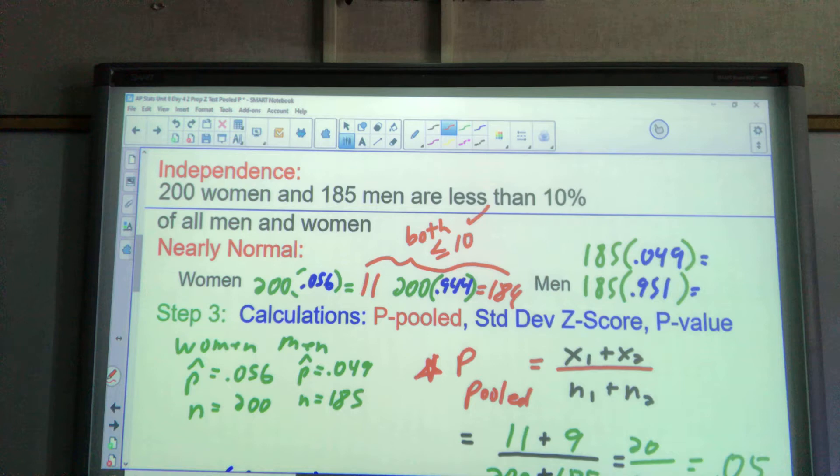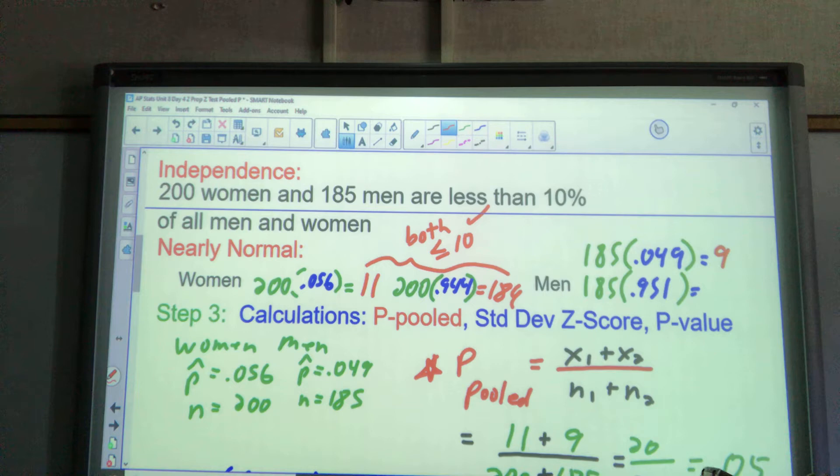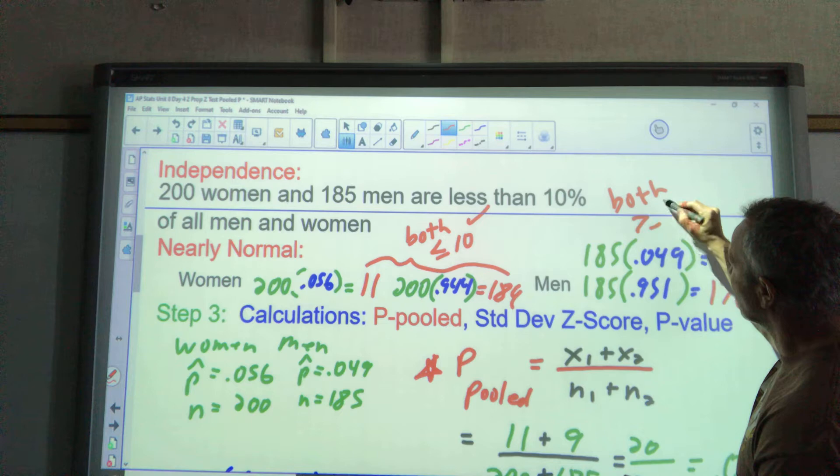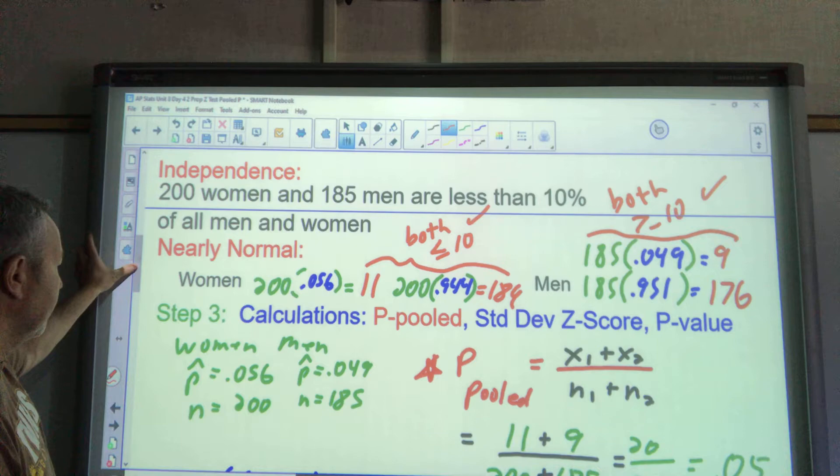I have 200 times 0.056. Down here it says 11.2. You can put 11, you can put 11.2, that's okay. I'm going to go ahead and just put 11. 200 times 0.944—if I have 11, this will be 189. Both are greater or equal to 10. My men: 185 times 0.049 is 9.065, that would be 9. 185 times 0.951 is going to get me 175.93, that would be 176. And if you add those, that's your 185. Again, you're not done until you say, guess what? Both are greater or equal to 10 down here. And I've met those conditions for the men and for the women.